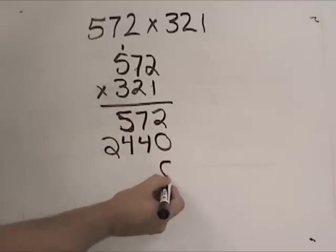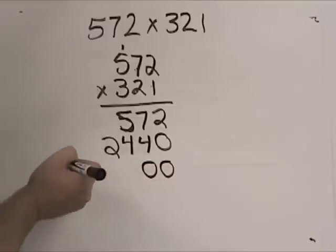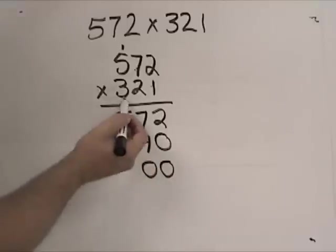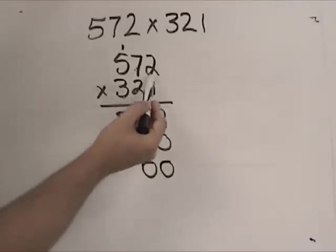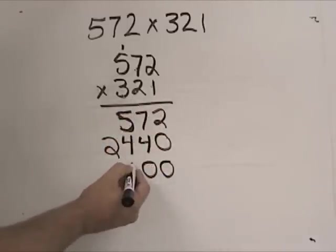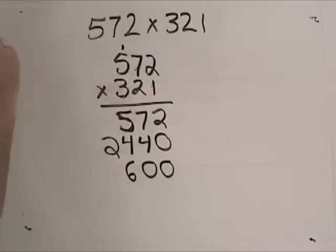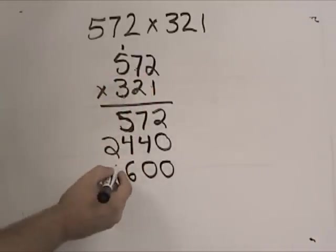When we get to this 3 here, we're going to have to add in two placeholders, because this is a 300. So I'm just holding that place value of that 300 there. 300 times 2 is 600. 300 times 70 is 2,100.